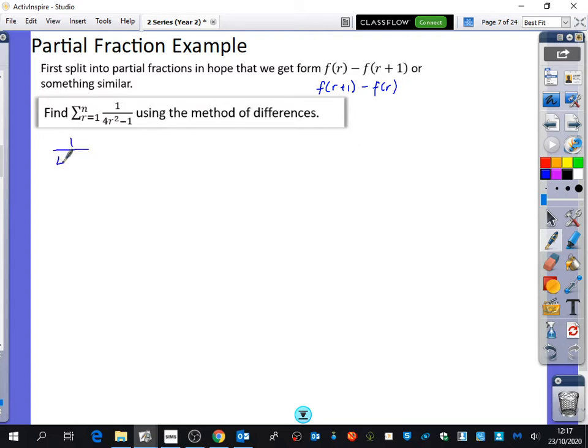I have to begin with 1 over 4r squared minus 1. I want to split it into partial fractions. So what can I do to the denominator? Good, so I have 2r minus 1, 2r plus 1. So it's going to be an a over 2r minus 1, plus a b over 2r plus 1. So 1 equals a times 2r plus 1, plus b times 2r minus 1.